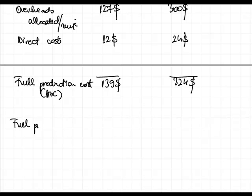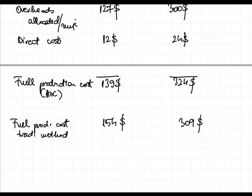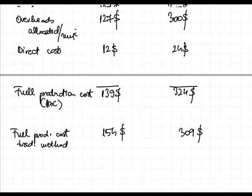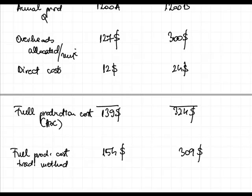Comparing this to the traditional method, one of the main advantages of the ABC method is that it's a fairer way to allocate costs, because we allocate them based on the actual level of the activities. For example, the handling costs are allocated in the ABC method based on the number of orders we have for each product.